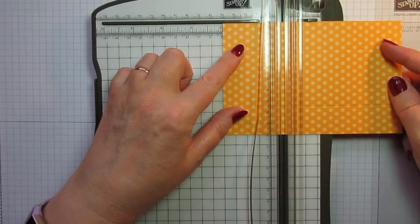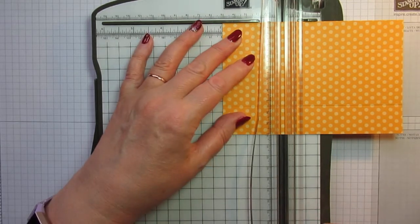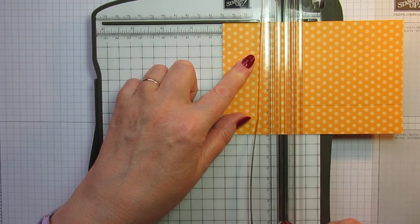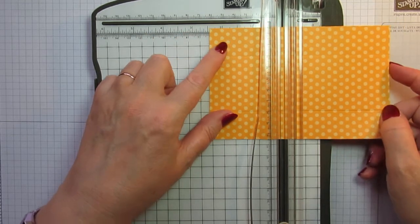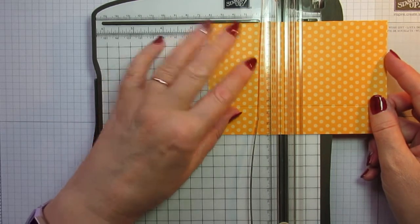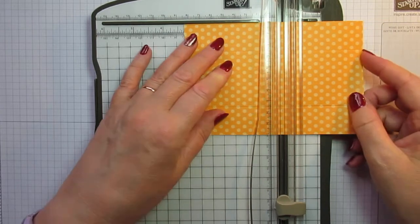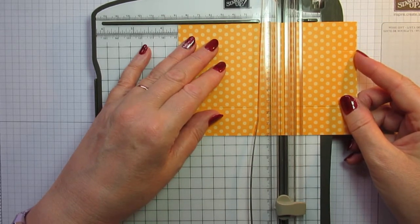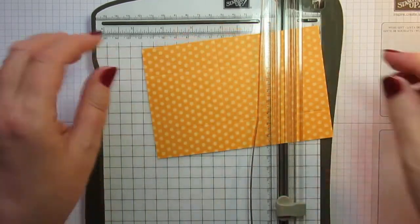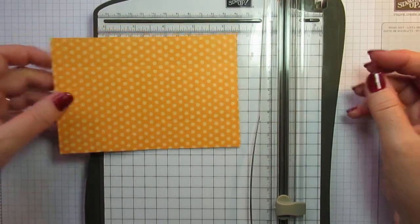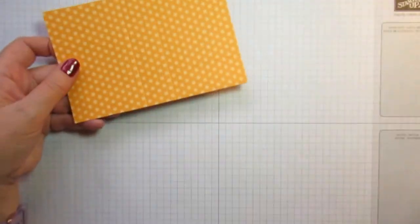And then on the long side, you're going to score it at two and a half. I nearly scored two there, but it's two and a half inches. And at three and a half. And that's all your scoring done. So I can get rid of the trimmer out of the way.